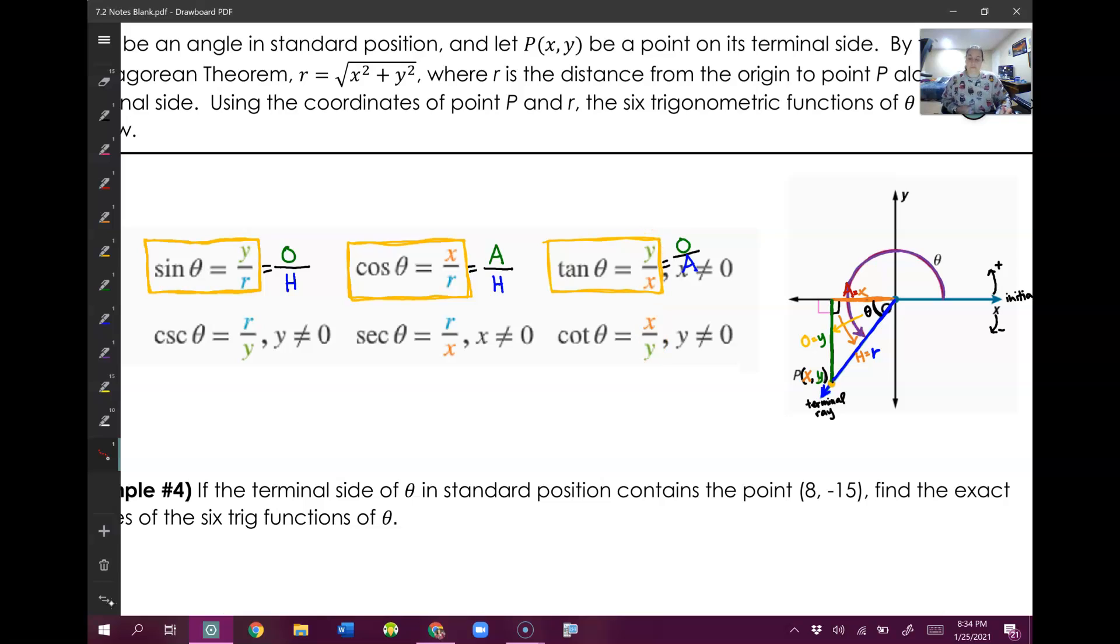Those things stay the same. Now, these three rules, that sine is Y over R, cosine is X over R, and tangent is Y over X, those must be memorized. You need to have those in your head. One little trick that I've used in the past is that sine, I can use the I to draw Y. So then my sine is always Y over R.